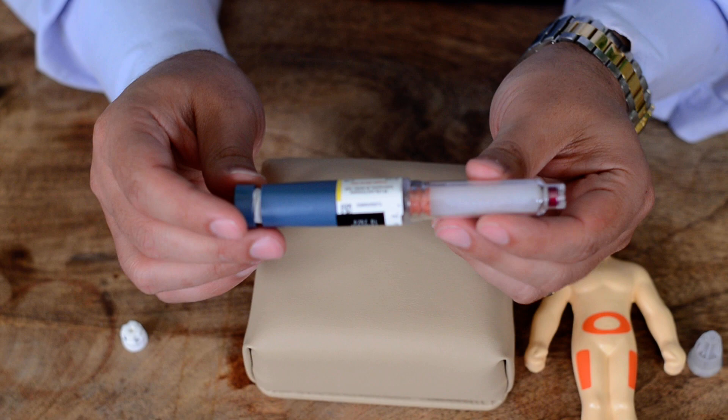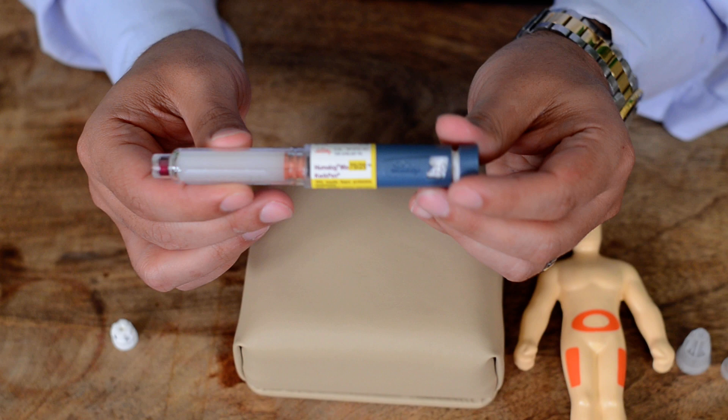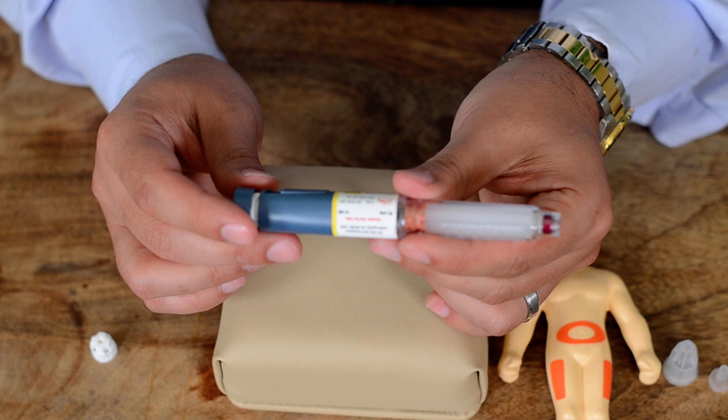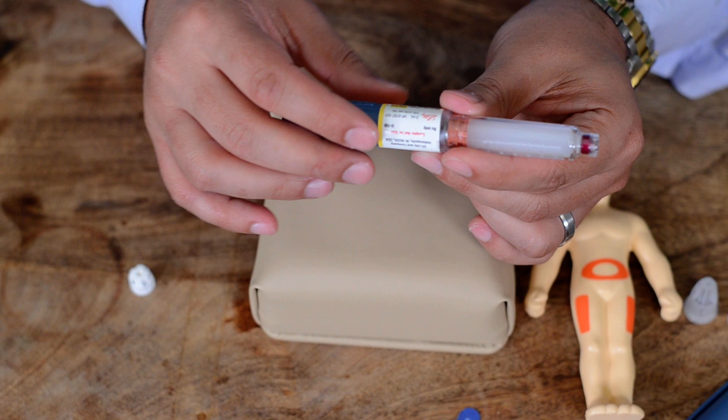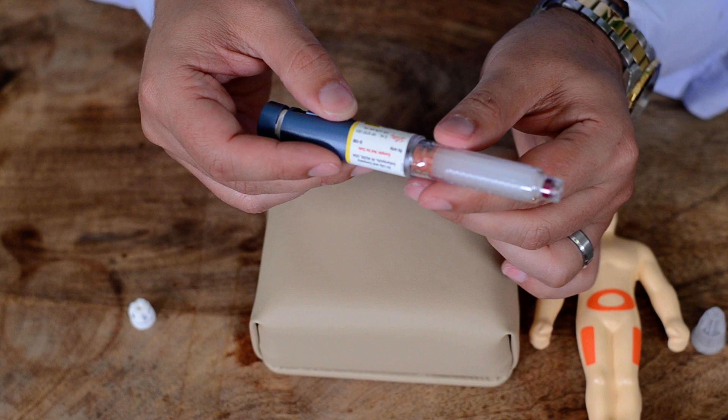Now remember, this is a mixed insulin. As a result, you cannot really use this pen more than 10 days in room temperature. And once you start using the pen, you take it outside the refrigerator and you can keep it in room temperature up to 10 days. After 10 days, you have to discard that. If you do not discard, the insulin may not be good anymore.